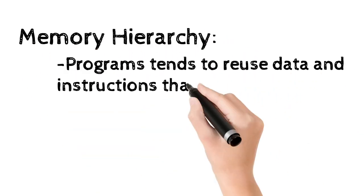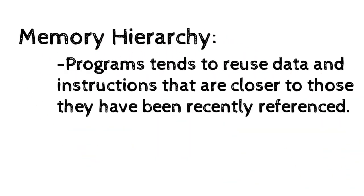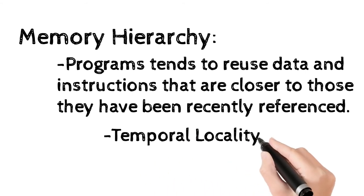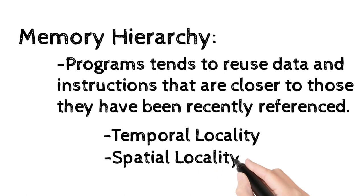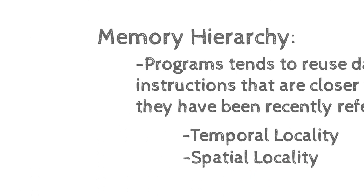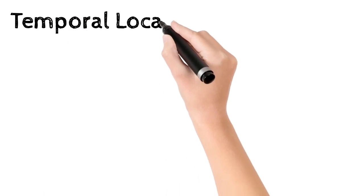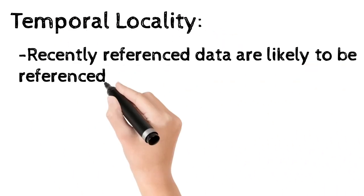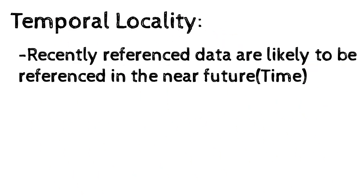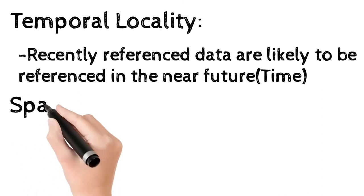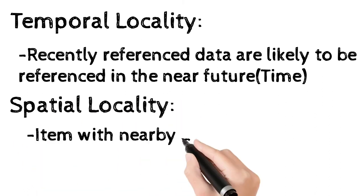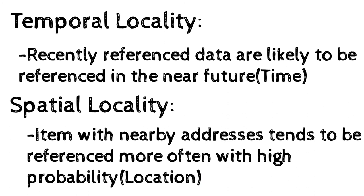Programs tend to reuse data and instructions that are closer to those they have recently referenced. This is based on two properties: temporal locality and spatial locality. Temporal locality means recently referenced data is likely to be referenced again in the near future. Spatial locality means items with nearby addresses tend to be referenced more often with high probability.